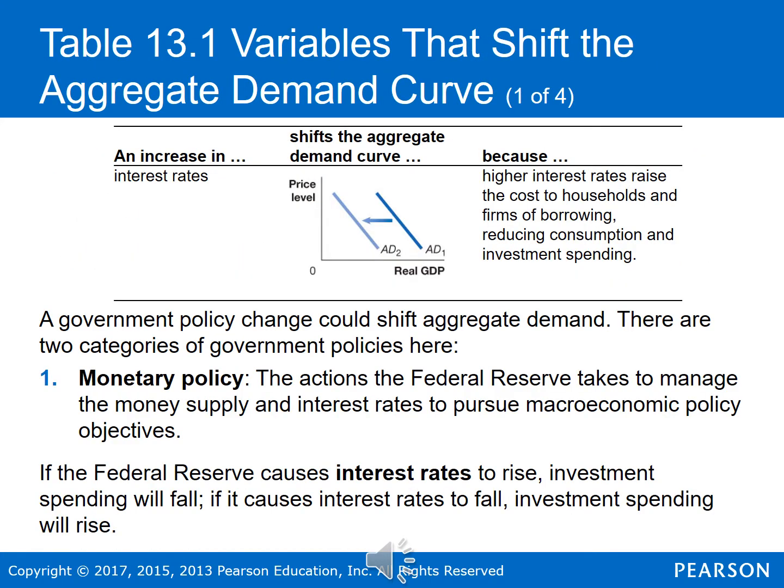So there are three categories of variables that shift the aggregate demand curve: changes in government policy, changes in the expectations of households and firms, and changes in foreign variables. First, let's look at a change in government policy — government policy changes can shift aggregate demand.